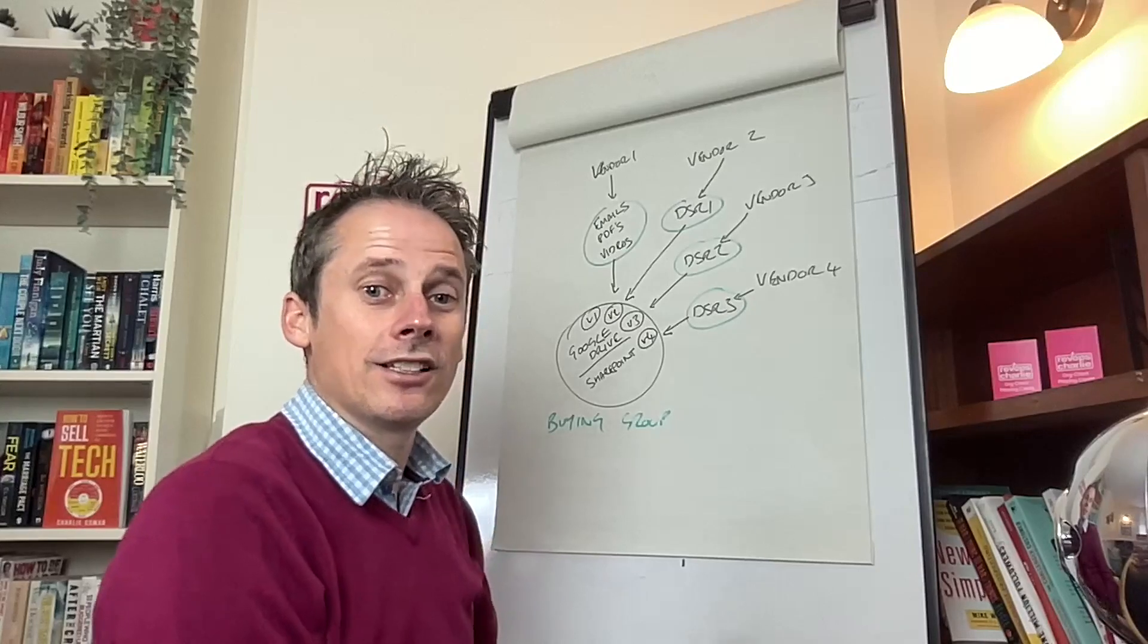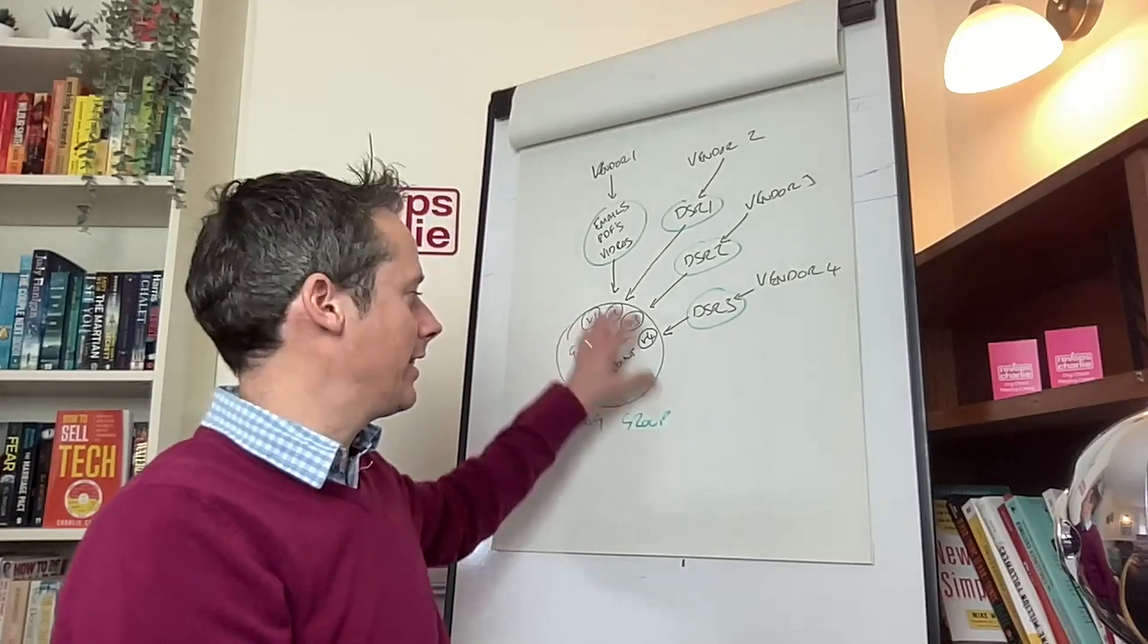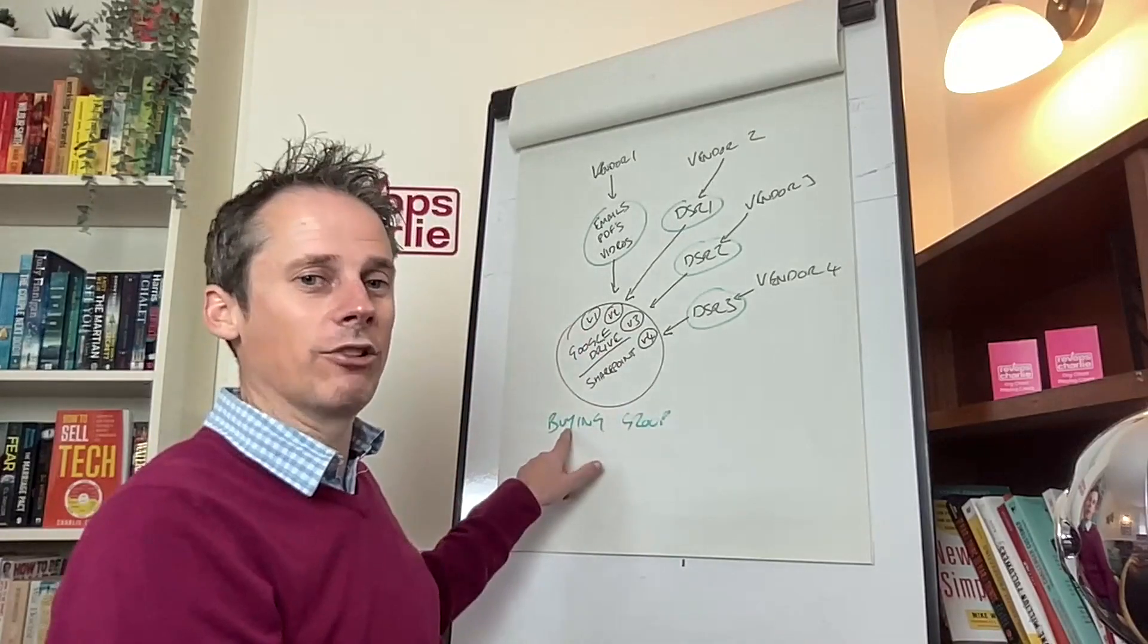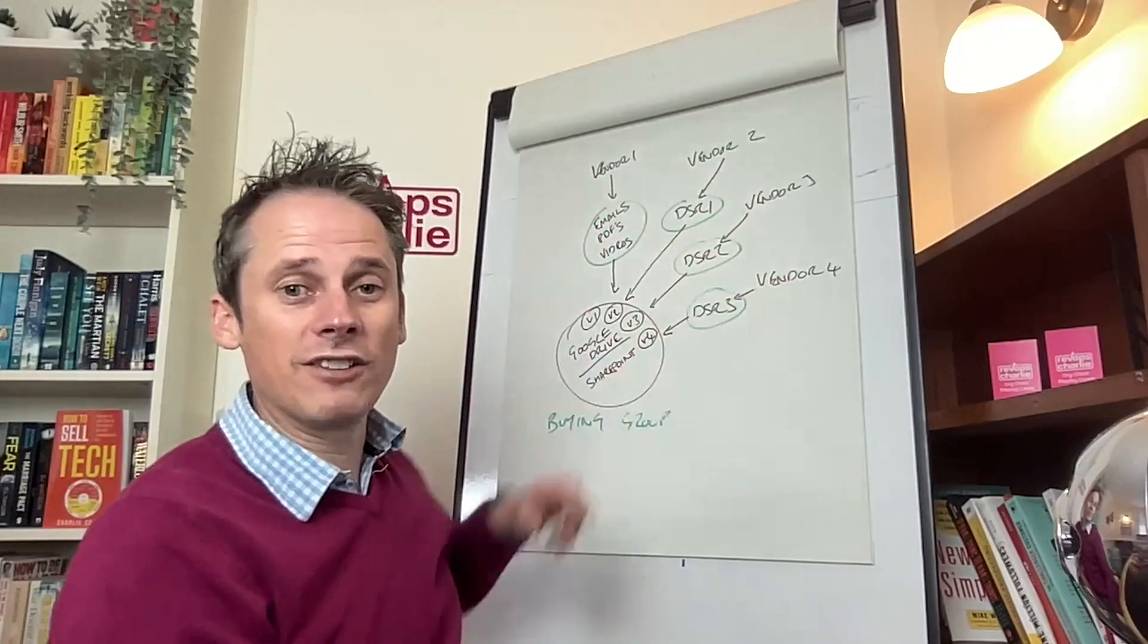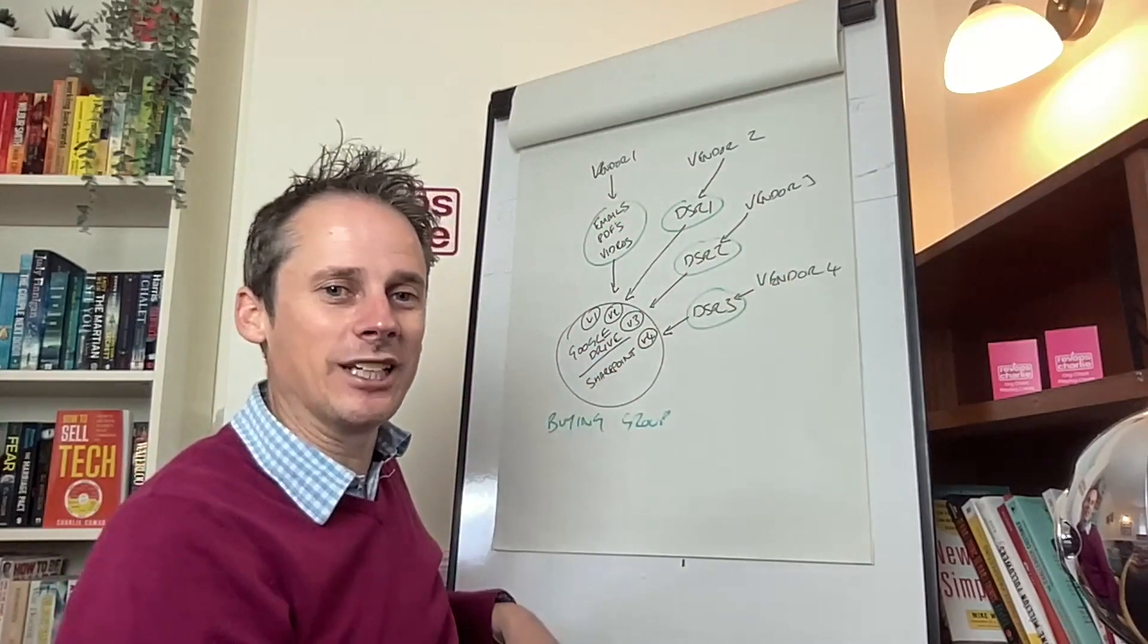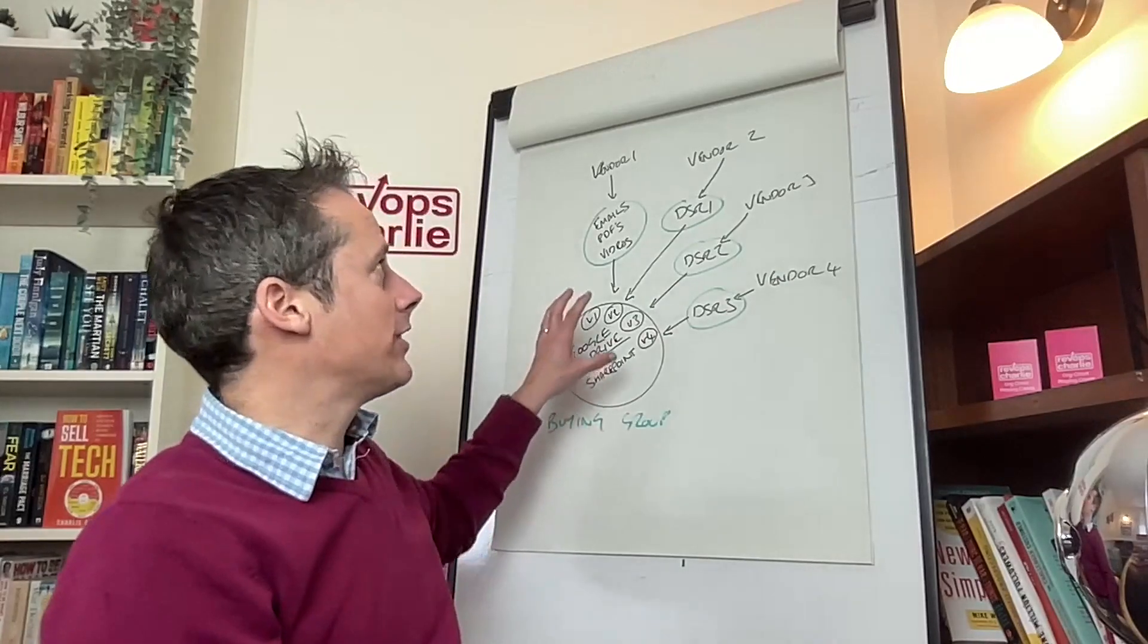Let's take an example of a typical buying process where here you have a vendor with their buying group, and maybe on their shortlist they've got four different vendors with very eager sales teams that are trying to sell their product.